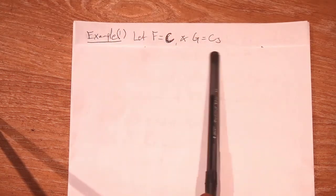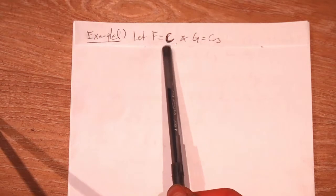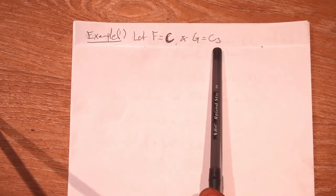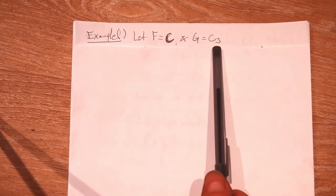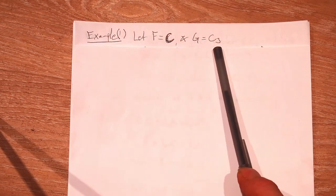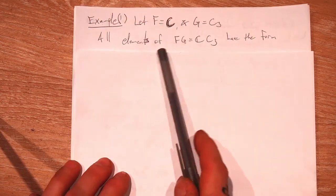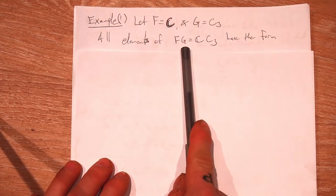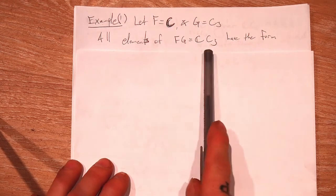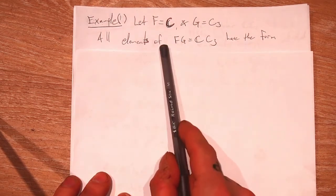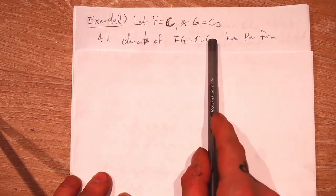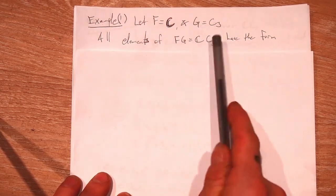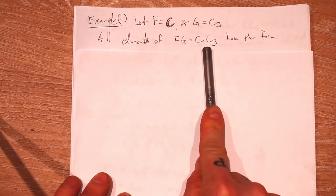But let's see an example. It becomes really clear if we have an example. So let our field be the complex numbers. Let our group be the cyclic group of order 3. So G is just generated by one single element of order 3. So we can use this group to generate our vector space. What is the vector space? It's the group algebra FG. So our vector space is the group algebra FG, or specifically CC3. This is our vector space.